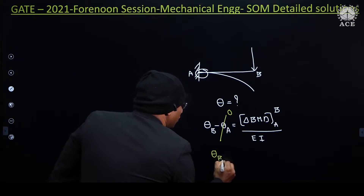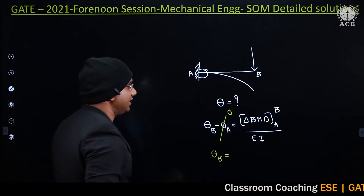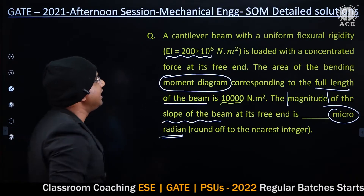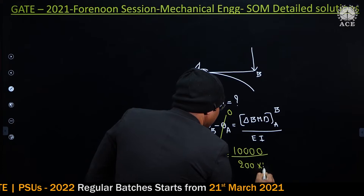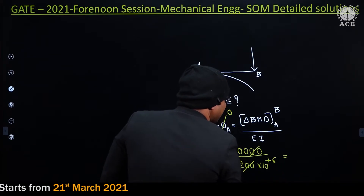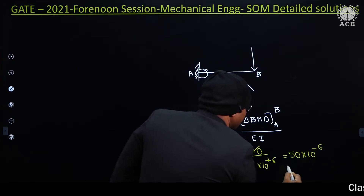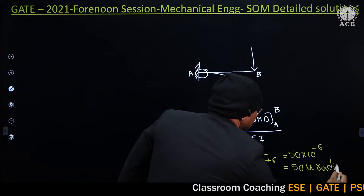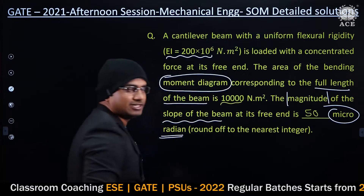So theta_B equals the area of the bending moment diagram divided by EI. The area is directly given as 10,000, divided by EI which is 200 × 10⁶. That gives 50 × 10⁻⁶, which is 50 micro radians. So the answer is 50 micro radians.